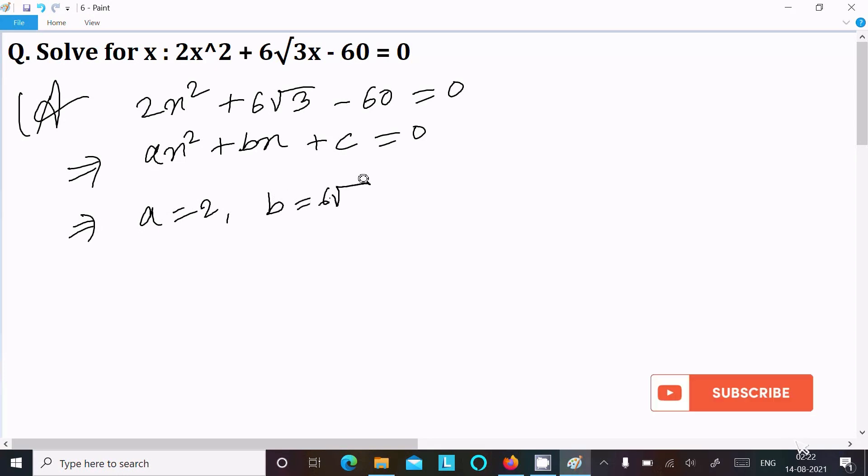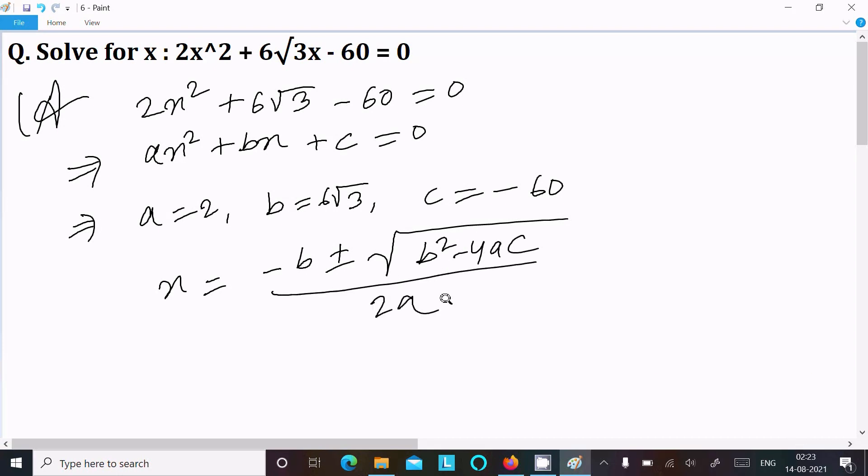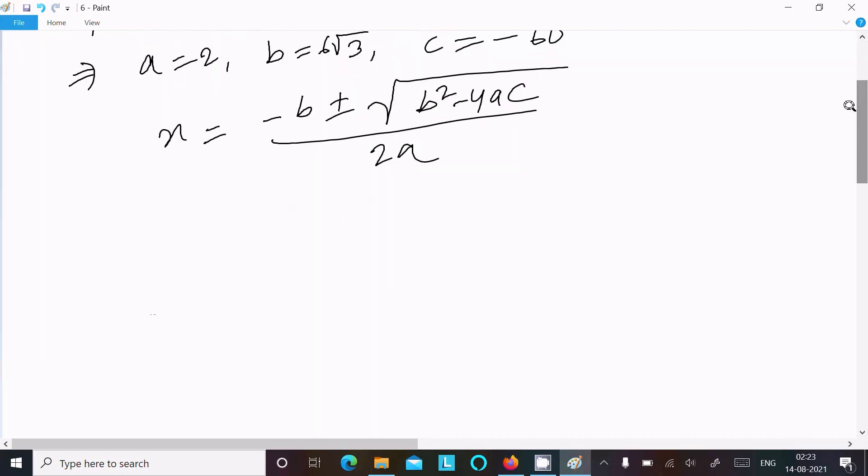b = 6√3, and the coefficient c = -60. Thereafter, I'll write here the quadratic formula: x = (-b ± √(b² - 4ac)) / 2a.